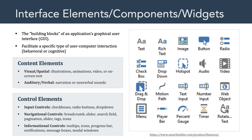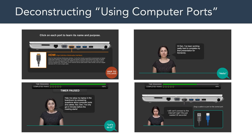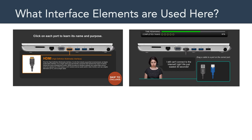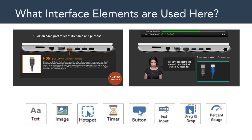Taken together, these are some of the main building blocks we're going to use to create rich multimedia experiences. Let's apply these building blocks to the using computer ports example by asking what interface elements were required to create this multimedia instructional message. On one level, this example is nothing more than text and pictures. However, on another level, it is a carefully designed interactive multimedia experience. The interface elements needed include text and images, hotspots and a timer, a button, a text input field — that's how the application knows our names — a drag-and-drop interaction to allow us to move cables to the proper ports, and even a progress bar and a percent gauge to help track our progress. That's quite a few interface elements just to build this simple example.